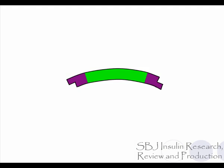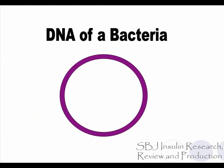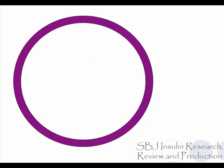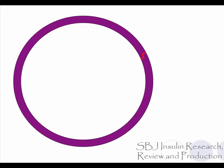Here is the insulin gene. This is a cell of a bacteria, another type of organism. In bacteria, some of the DNA is in circles. These are called plasmids, and we can use them to insert a gene into the bacteria. In order to insert the insulin gene into the plasmid, we need to cut the plasmids with restriction enzymes, or the scissors.